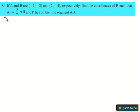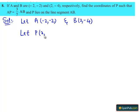So, moving on to the solution, let the given points be A and B. Let the coordinates of the point P be (x, y). In the equation, it is given that AP equals 3/7 of AB and P lies on the line segment AB.